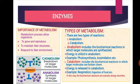Catabolism includes biochemical reactions in which larger molecules are broken down into smaller molecules, and energy is released. This released energy is used in anabolism. Examples are respiration and digestion of food. Respiration is the reverse process of photosynthesis — in respiration, the large molecule glucose is broken down into small molecules like water and carbon dioxide.